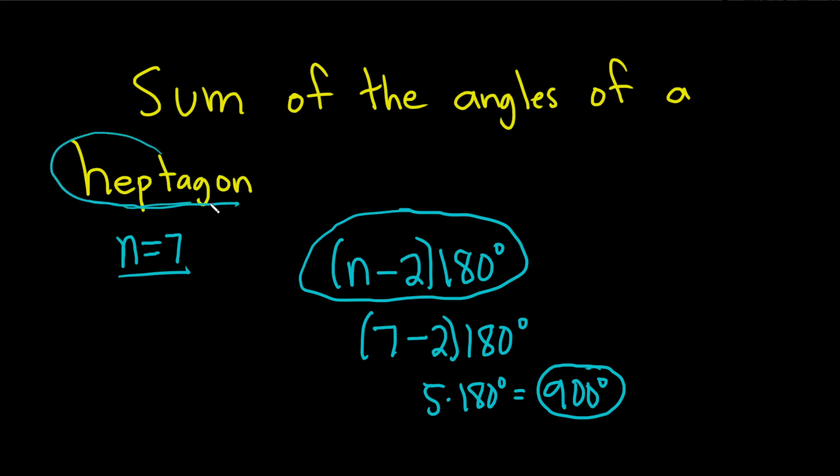So you just have to memorize one, how many sides does a heptagon have? And two, the formula for the sum of the angles of an n-gon. So if you know these two things, all you do is plug in the 7, and then you're good to go. I hope this video has been helpful.